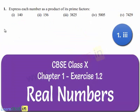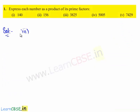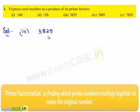Now, let us move on to the third bit. The third number given is 3825. To express 3825 as a product of its prime factors, we shall factorize it.